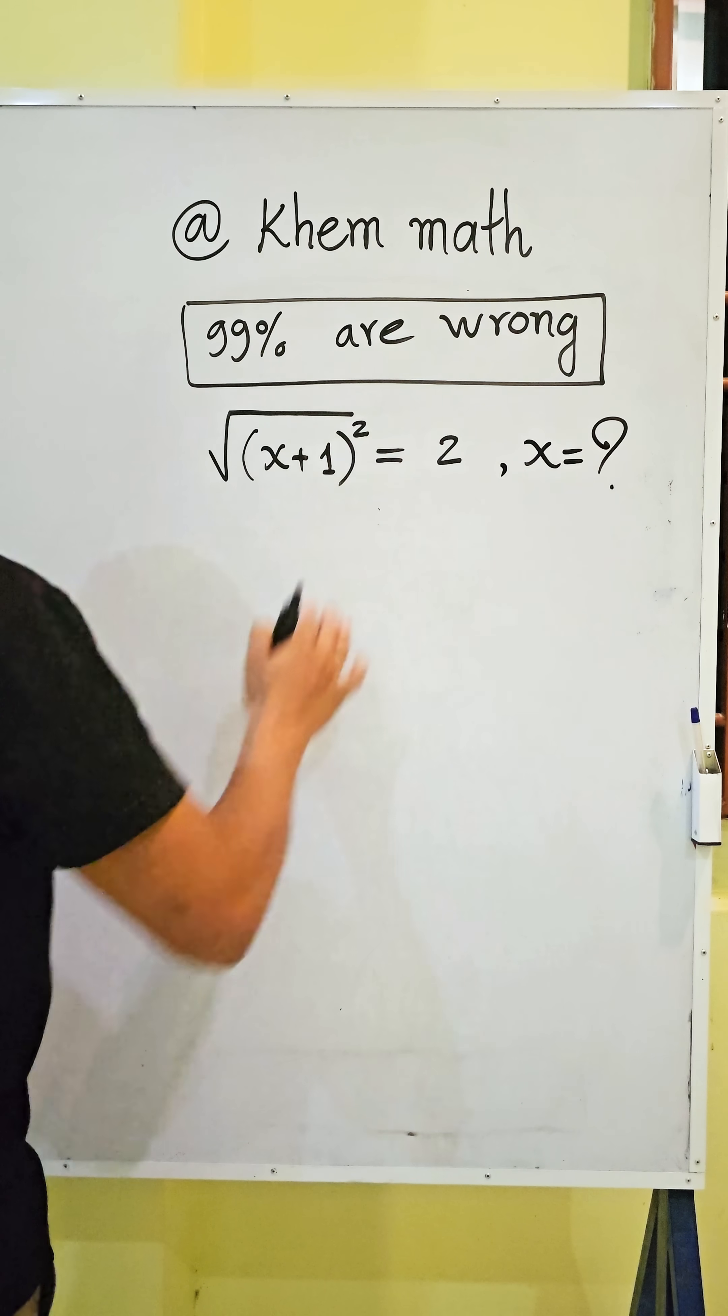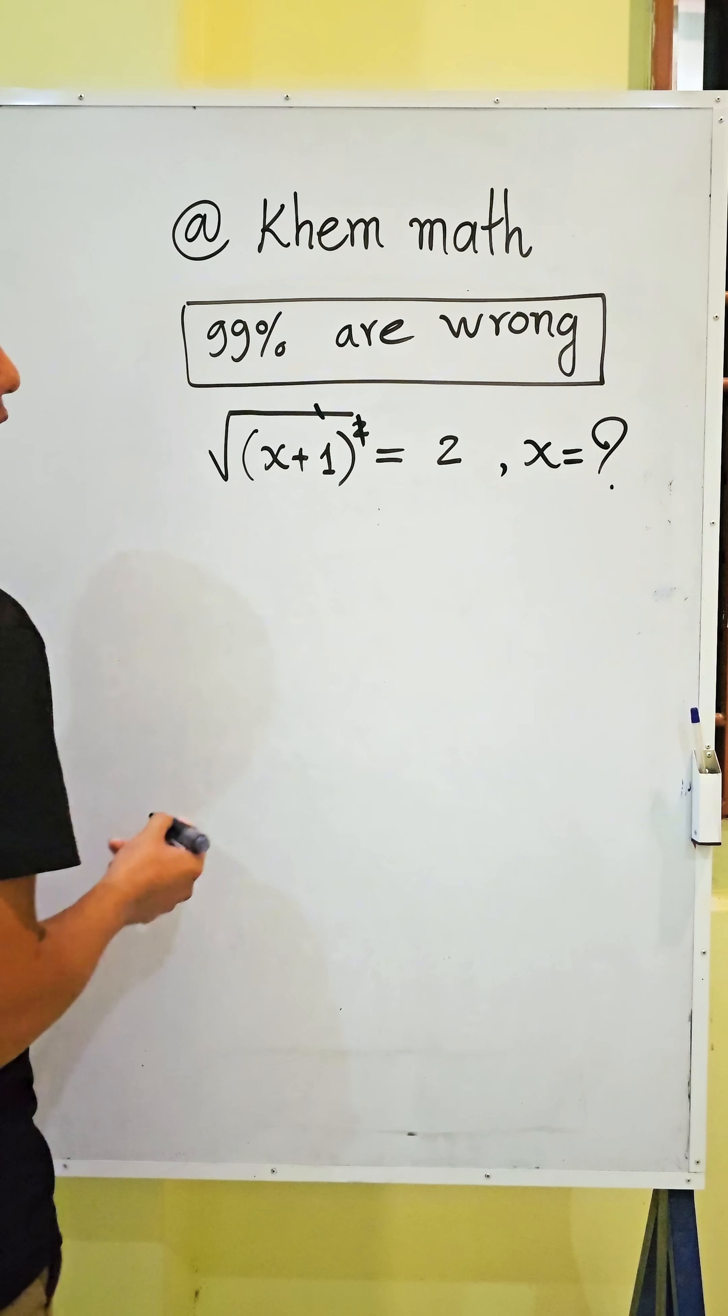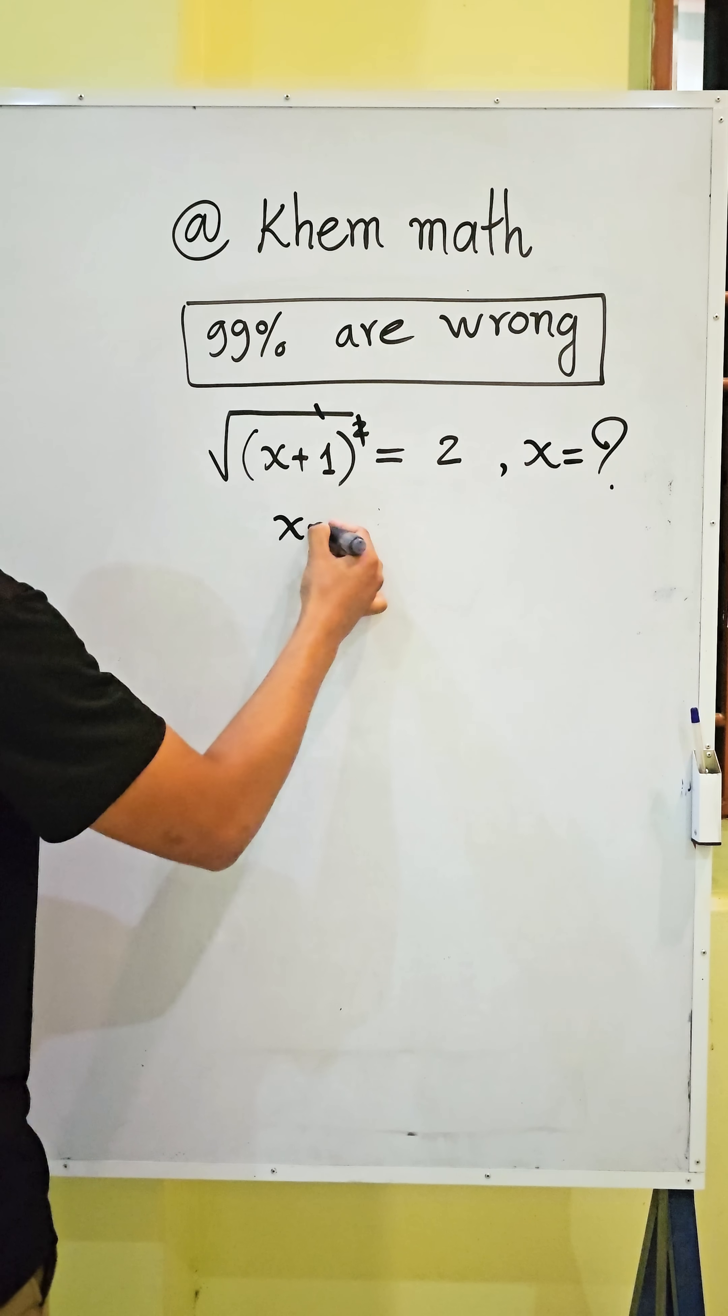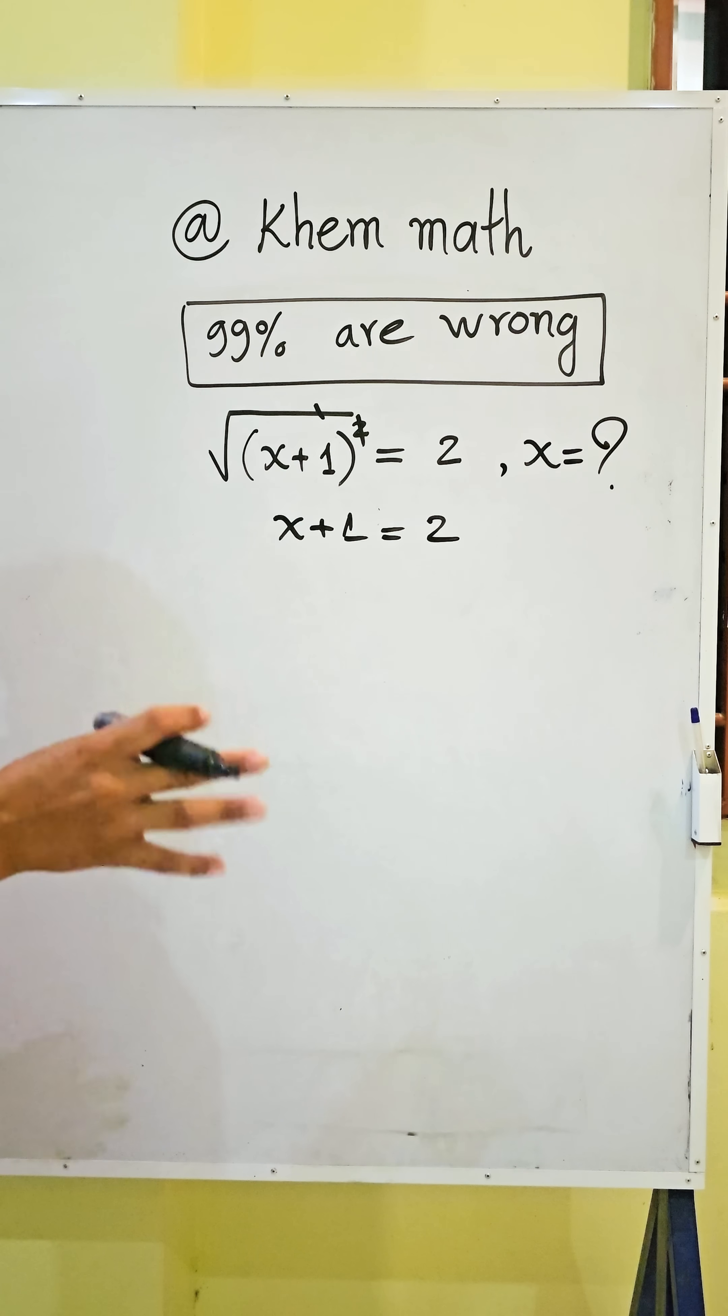99% are wrong. Why I say like that? Because most of our students may be simplified square with square, get x plus 1 equal to 2. So it may be wrong.